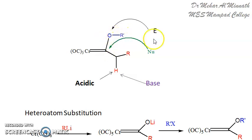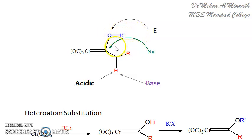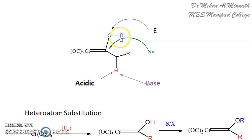In another set of reactions, an electrophile can come and attack on the oxygen — that is also possible. Furthermore, the heteroatom part can be replaced: instead of O-alkyl, you can have S-alkyl (sulphur) or N-alkyl (nitrogen); such heteroatoms can be brought in. We shall see all these reactions.